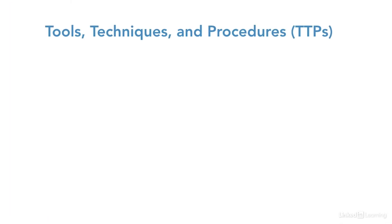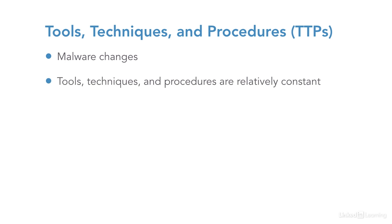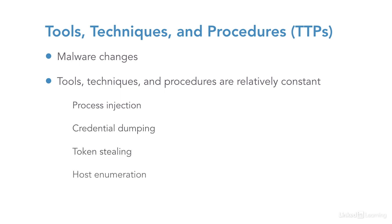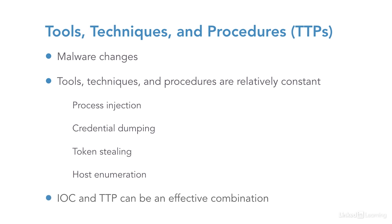While adversaries constantly change and adapt malware, they tend to use the same tools and techniques and procedures in the malware. Process injection, credential dumping, token stealing, host enumeration approaches and so on. By developing ways to detect these indicators and add them to the standard IOC checks, the success rate for detecting malware will be significantly enhanced.